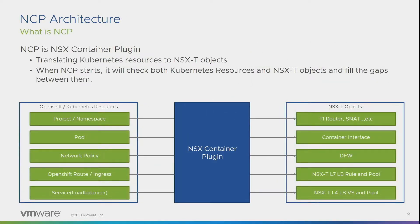That's what NCP does behind the scenes. NCP comprises many components. The whole idea is basically to translate Kubernetes resources into NSX-T objects. It runs as a pod and it's stateless — every time it starts up, it looks at what you have configured in Kubernetes, and if there's any gap, it will create all the objects as well. For example, in OpenShift, when you create an object — basically a Kubernetes namespace — in NSX, we actually create a T1 router and configure a SNAT pool for it.